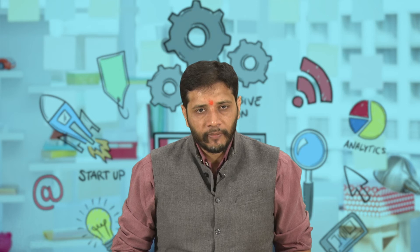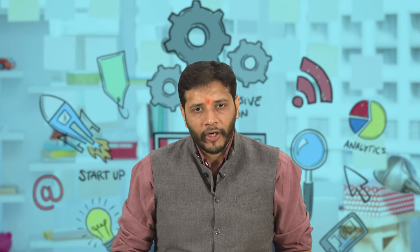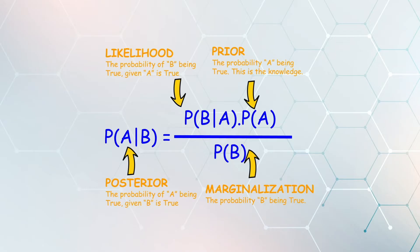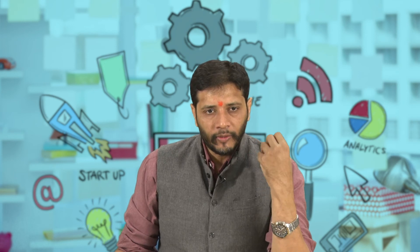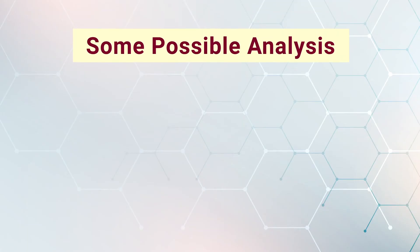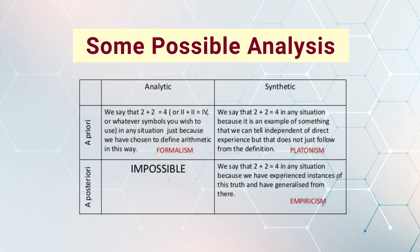In this formula, likelihood is the probability of B given A, prior is the probability of A, and probability of B is marginalization — the probability of B being true. For priori, we say 2+2=4 just because we have chosen to define arithmetic this way, which is called formalism. In synthetic terms, we say 2+2=4 because it is an example of something we can tell independent of direct experience but does not just follow from definition — this is called Platonism.